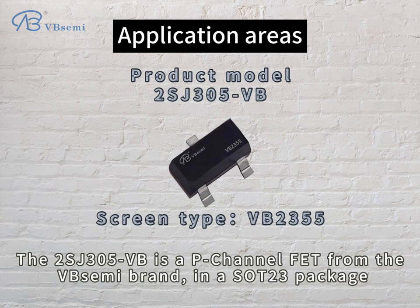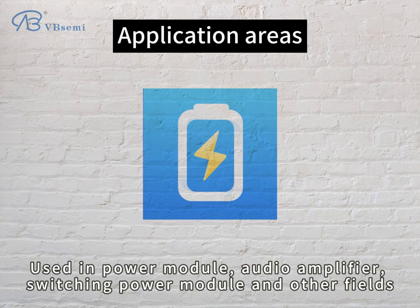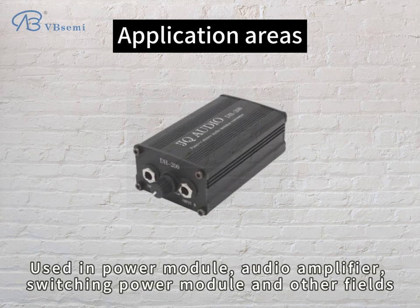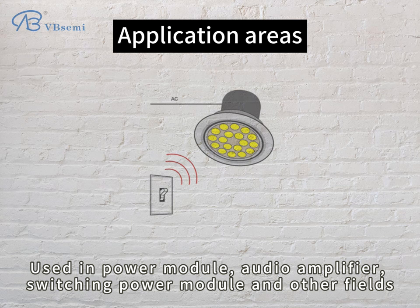The RSJ305VB is a P-Channel FET from the VB Semi brand, in a SOT-23 package. It is used in power modules, audio amplifiers, switching power modules, and other applications.